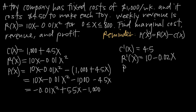For marginal profit, P'(x), we take the derivative of −0.01x² + 5.5x − 1,000 term by term. The derivative of −0.01x² is −0.02x, the derivative of 5.5x is 5.5, and the derivative of −1,000 is 0. So P'(x) = −0.02x + 5.5. Now we have all three marginal functions: marginal cost, marginal revenue, and marginal profit.